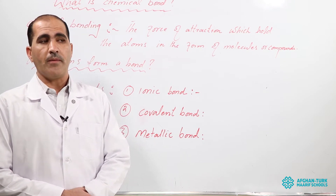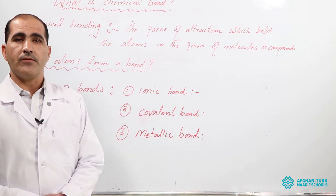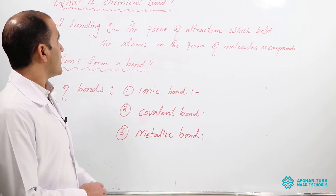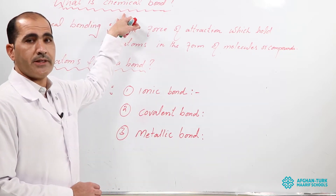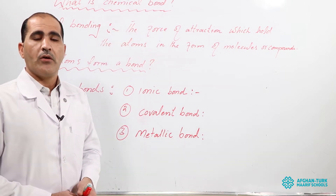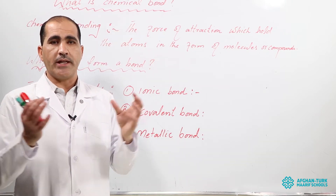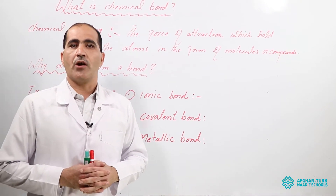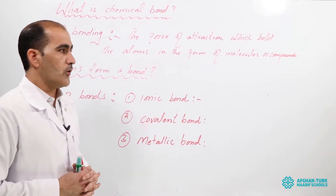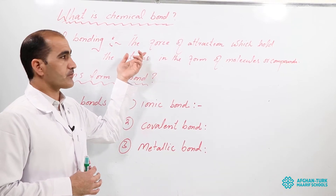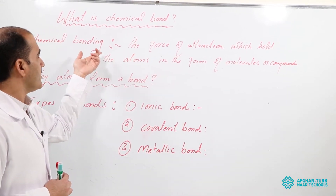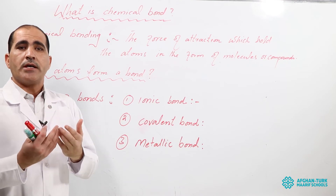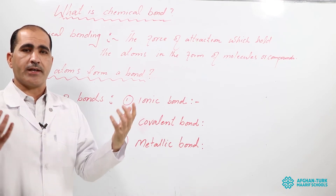What is chemical bonding? First of all, you should know the definition of chemical bonding. The force of attractions which are responsible to hold the atoms in the form of molecules or in the form of compounds — we call it chemical bonding. Chemical bonding is simply a force of attraction between two same kind of atoms or different kinds of atoms.